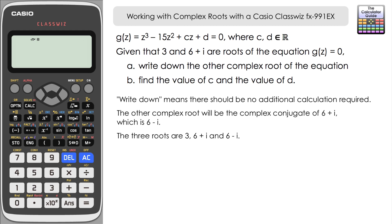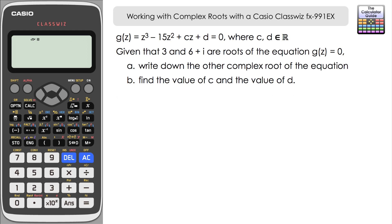Part B is going to take a little more work — find the value of C and the value of D. We only have the roots to work with. What we're going to do is form a cubic equation which we can then compare with G(Z) at the top and discover what C and D will be.